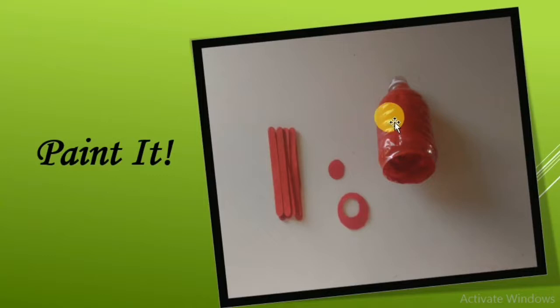The first thing you need to do is take a plastic bottle, cut it, and paint it with the color of your choice. Here I have painted it red. Then take some ice cream sticks and paint them with red or any color of your choice. Then take foam paper and cut it into two circles for the head of the spider. The ice cream sticks are for the arms of the spider.